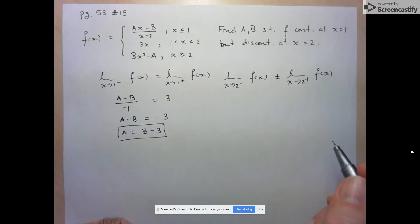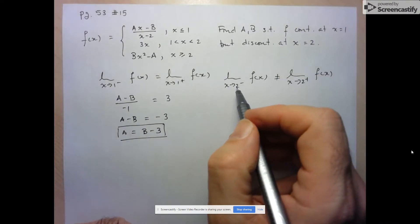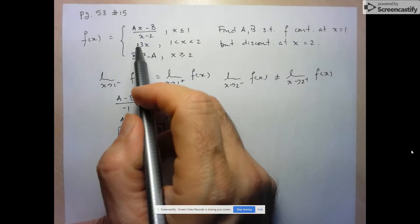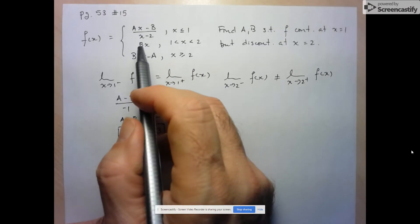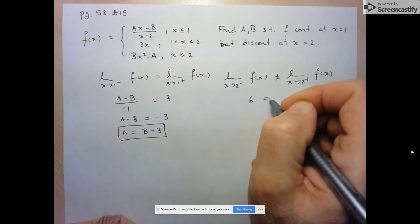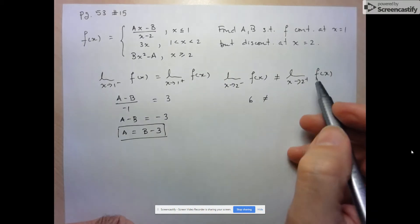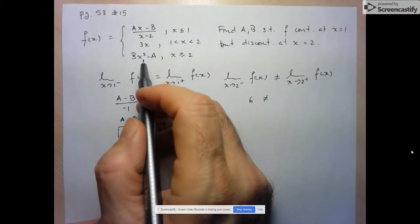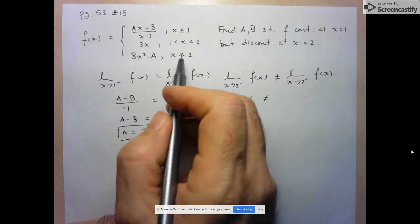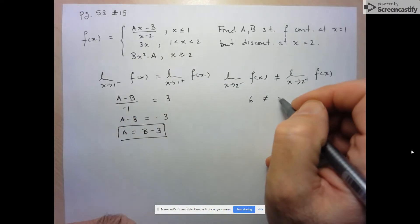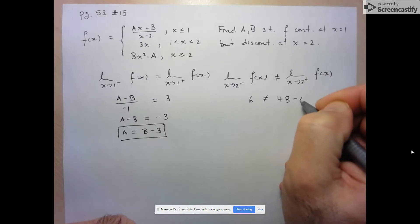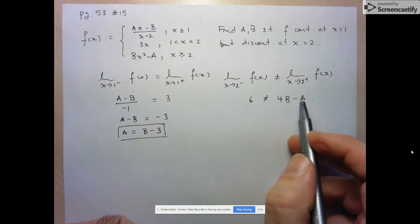Let's find the limit as X approaches 2 from the left. To the left of 2, the function is defined as 3X, so the limit is just 3 times 2, which is 6. And that cannot equal the limit to the right of 2, which is defined by a quadratic. We can just input the number, giving us 4B minus A — since 2 squared is 4, that's 4B minus A.